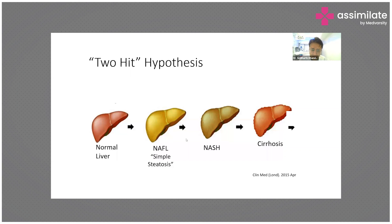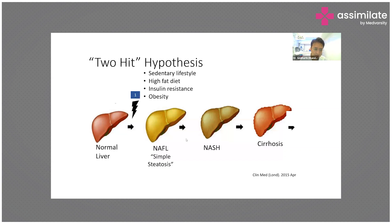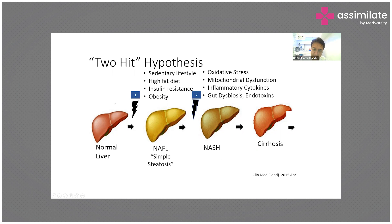Regarding pathogenesis, this is the natural course of a normal liver progressing to cirrhosis in a patient with NAFLD — a two-hit model. The primary hit causes progression from a normal liver to simple steatosis due to sedentary lifestyle, high fat diet, insulin resistance, and obesity. The secondary hit, the more worrisome feature leading to NASH, is caused by oxidative stress, mitochondrial dysfunction, liver inflammation, gut dysbiosis, and endotoxins.